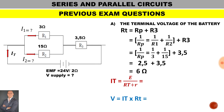To calculate the total current, we divide the EMF of 24 volts by the total resistance of the circuit, which is 6 ohms external plus 2 ohms internal, giving 8 ohms total. Therefore, the total current is 3 amps. The potential difference across the battery in the closed circuit is 3 amps multiplied by 6 ohms, which equals 18 volts.